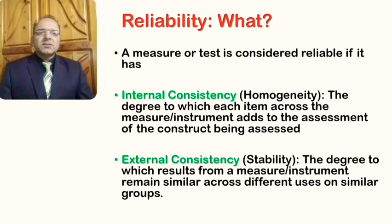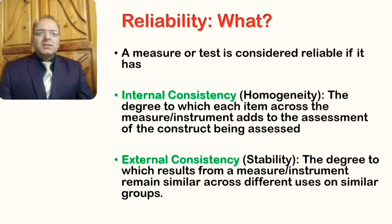External consistency, also called stability, is the degree to which results from a measure or instrument remain similar across different uses on similar groups. So you use the instrument once, and you use it again, and the results are similar — that reflects the external consistency of the instrument. An instrument that has both internal and external consistency will be considered a reliable instrument.